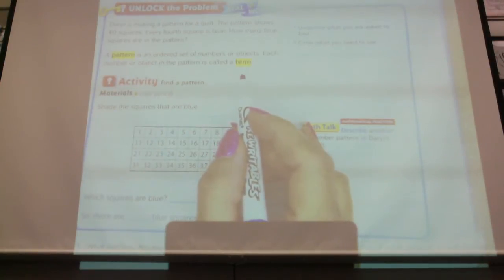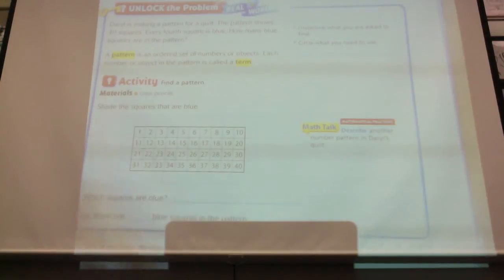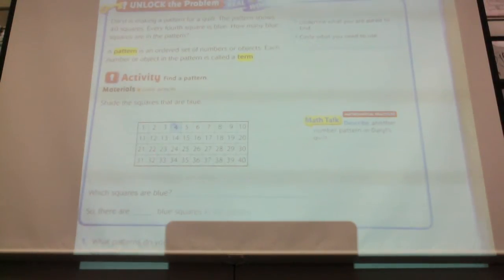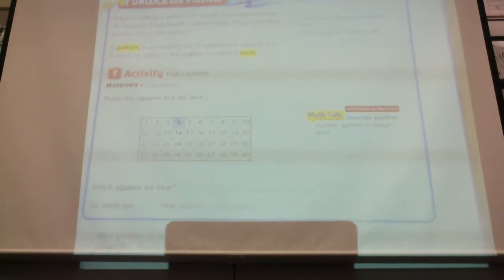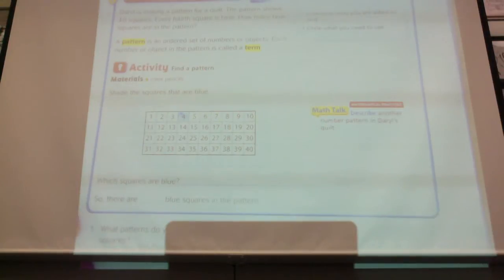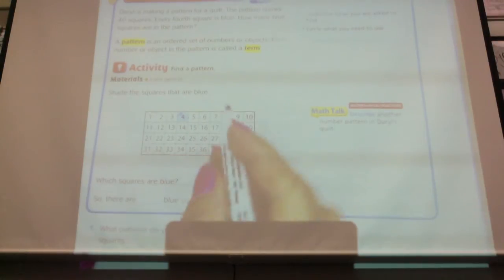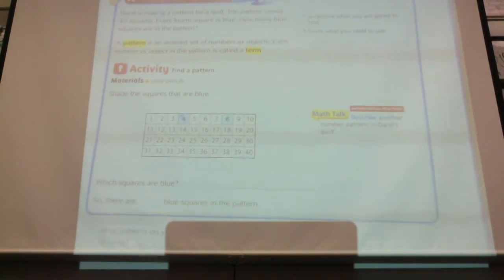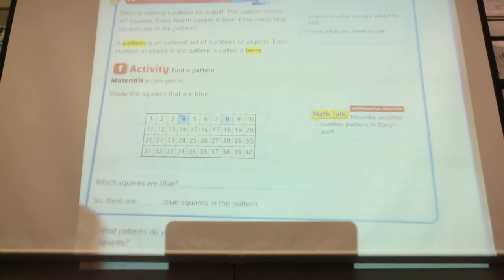That's a new word for you, right? You haven't heard the word term. So in the first case, this one we know the fourth square needs to be blue, so one of the terms is four. We're not coloring yet. What is the next one going to be? Which one is going to be my next blue square? Aiden? Eight. Eight. Okay, you guys can actually use your pencil to color and keep up with me.